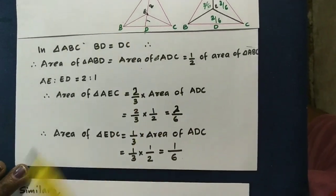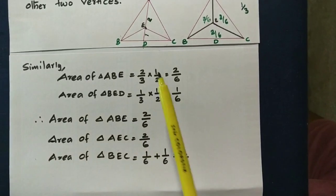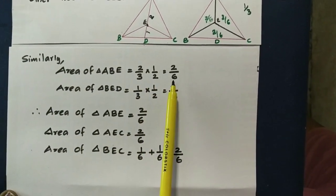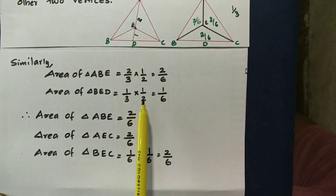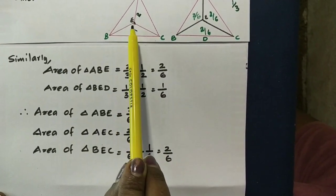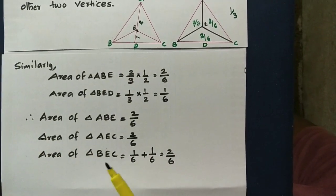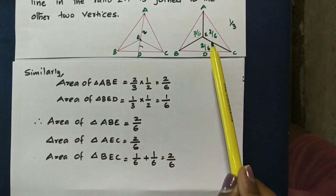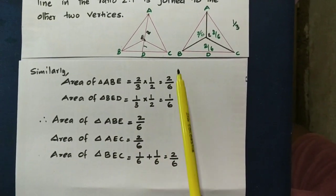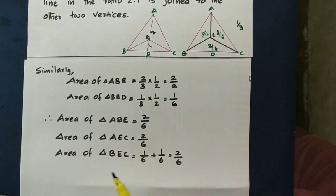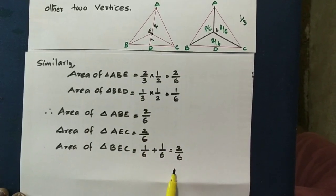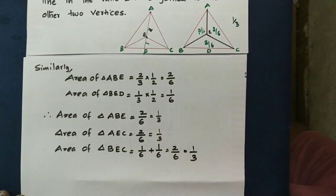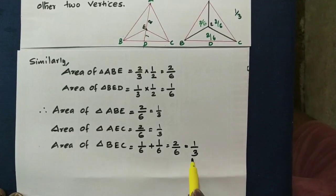We call it one third of this triangle. Here 2 by 6 and 1 by 6 — in the same way, triangle ABE is 2 by 3 into half, which is 2 by 6. Triangle BCE is 1 by 3 into half, which is 1 by 6. So 1 by 6 plus 2 by 6 plus 2 by 6 — we call it 1 by 3. The median divides the whole triangle into one third each. We will prove that the whole triangle area is one third.